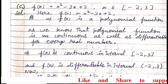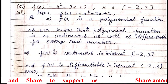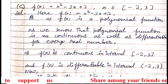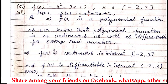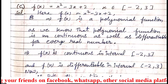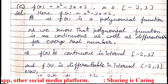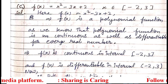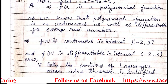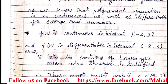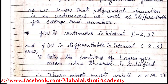Now we move to part C. In part C, we have the polynomial function f(x) = x² - 3x + 2, where x belongs to [-2, 3]. This is a polynomial function because the powers of x are positive integers. We know that polynomial functions are continuous as well as differentiable for all real numbers. Therefore, first condition: f(x) is continuous in closed interval [-2, 3]; second condition: f(x) is differentiable in open interval (-2, 3).